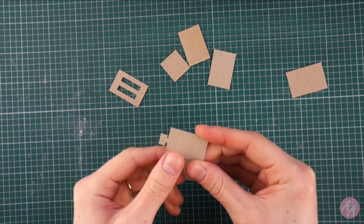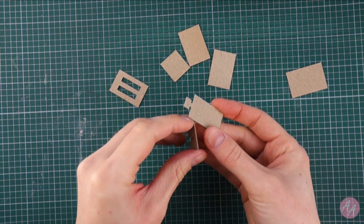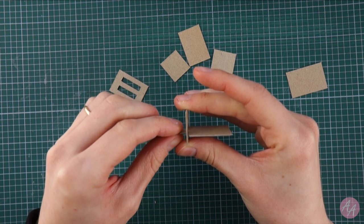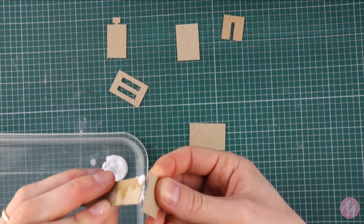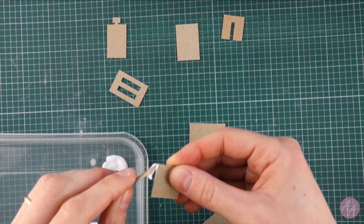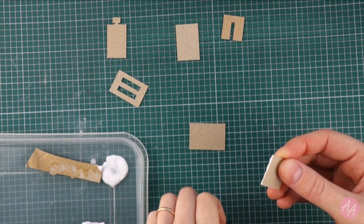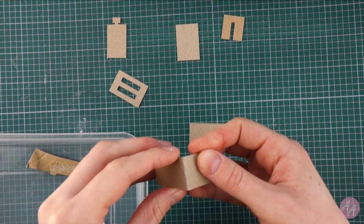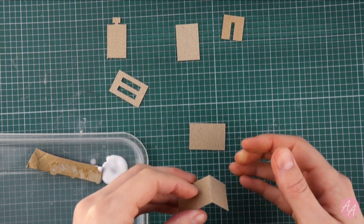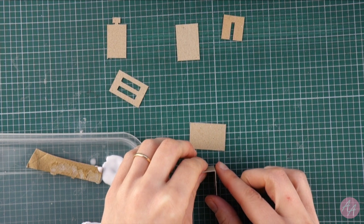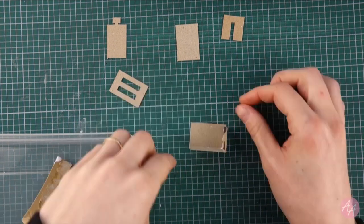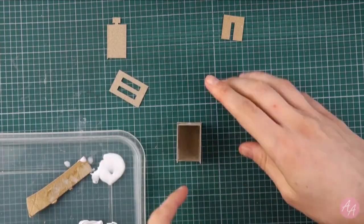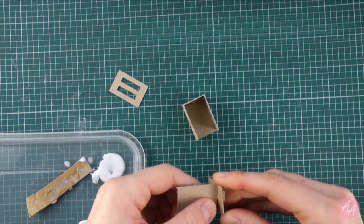I've also cut a piece of card which will sit inside the toaster and will be able to be pushed up and down with the little piece sticking out, just like a real toaster. Now I'm ready to stick it all together using PVA glue.